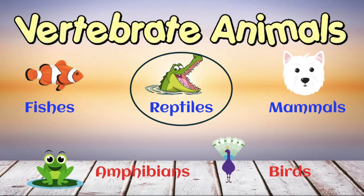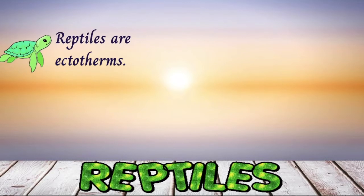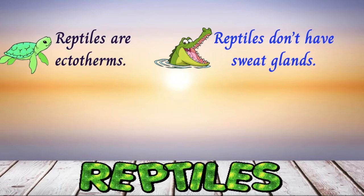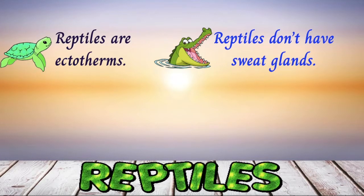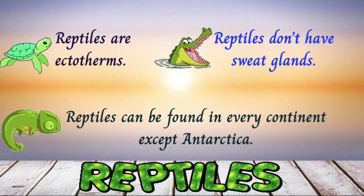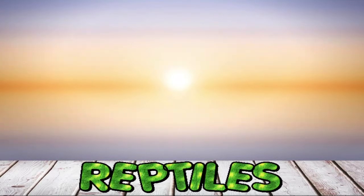Now let's have a glance at reptiles. Reptiles are ectotherms, meaning they rely on regulation of their body temperature on external sources like sunlight. Reptiles are not slimy because they do not have sweat glands, so their skin remains cool, dry, and waterproof. Reptiles can be found on every continent except Antarctica.